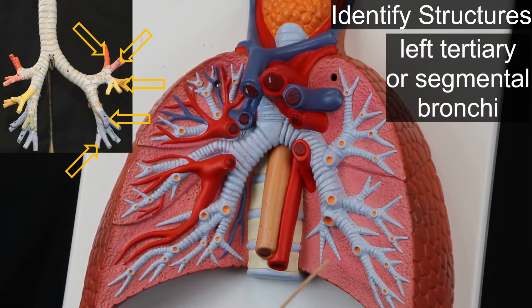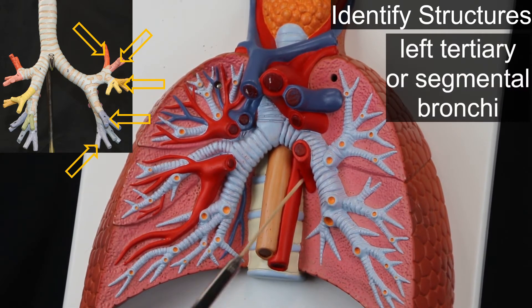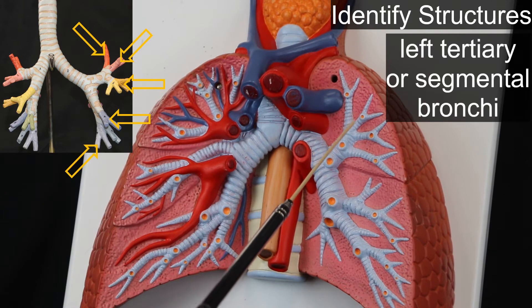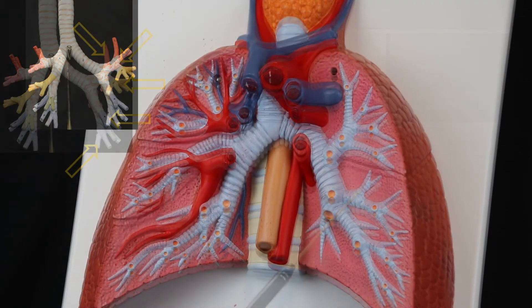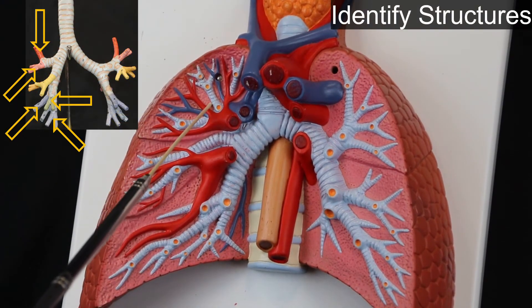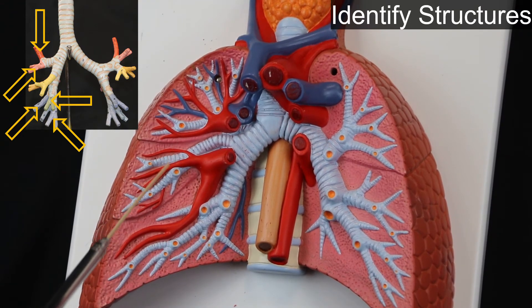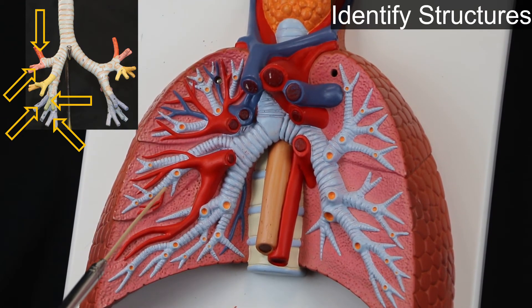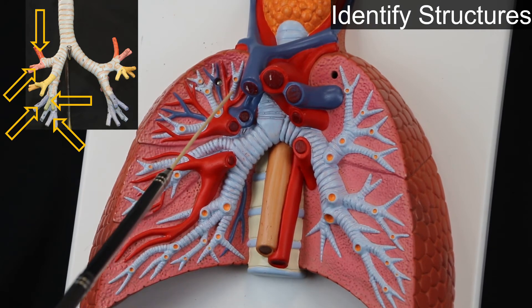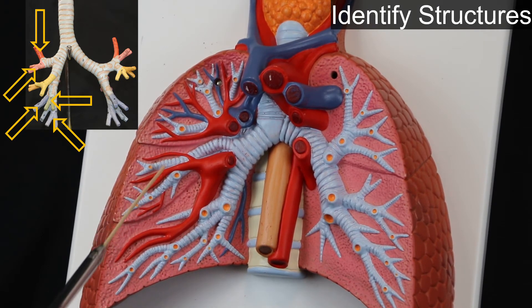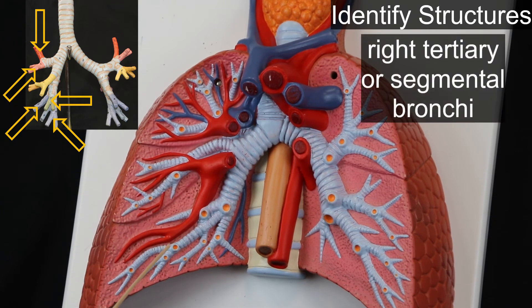ID. Structures: left tertiary, or segmental bronchi. ID. Structures: right tertiary, or segmental bronchi.